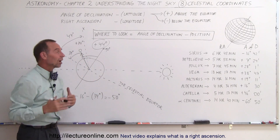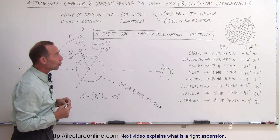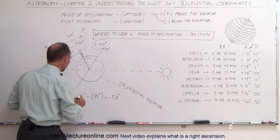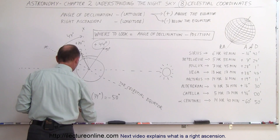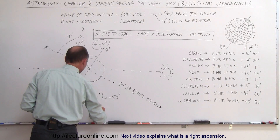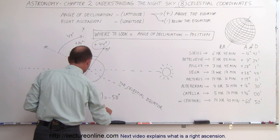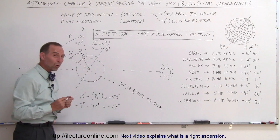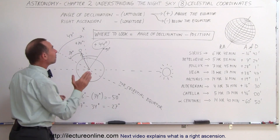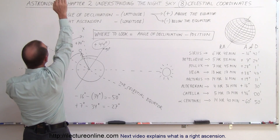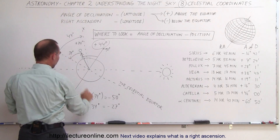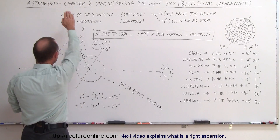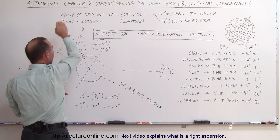Betelgeuse is the big red giant in the constellation Orion, at 7 degrees above the equator. Applying the equation: plus 7 degrees minus 34 degrees equals minus 27 degrees. So I look for Betelgeuse at an angle of 27 degrees toward the south — 27 degrees away from the point directly above me, because it's closer to the equator.